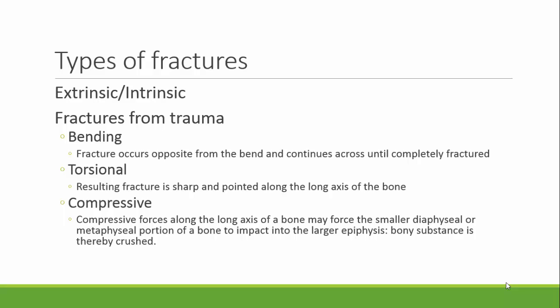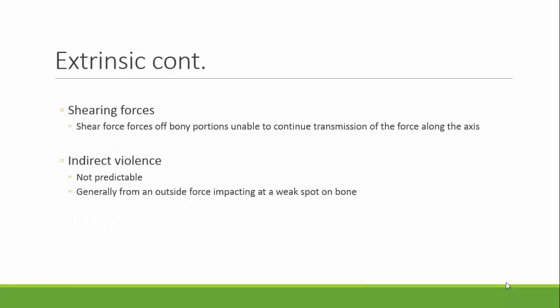Compressive forces happen along the long axis of the bone, and it is when a smaller section of the middle — the diaphyseal section — is forced into a larger section or into the larger epiphysis. The bone substrate is crushed, and these compressive forces lead to fracture in the bone. Shearing fractures are caused by a force transmitted along the axis of the bone, then transferred into another bone that lies peripheral to the axis or across the joint. The force shears off the bony portion that is unable to continue the transmission of the force between the two bones. Indirect violence is not predictable and generally comes from an outside force impacting at a weak point in the bone.